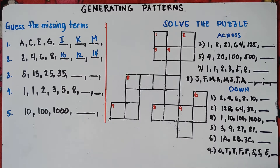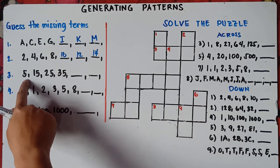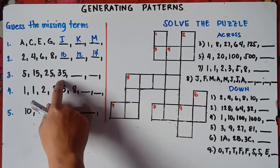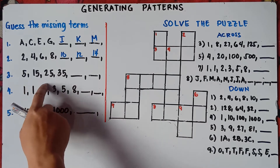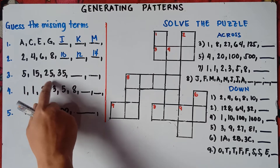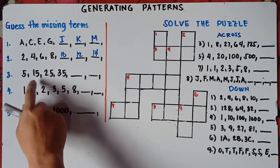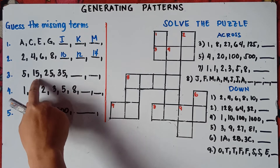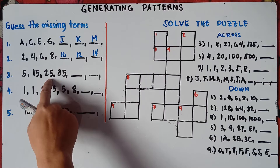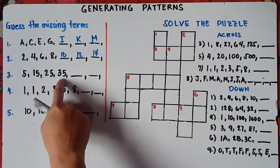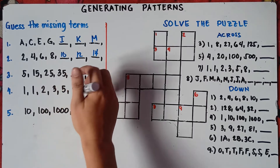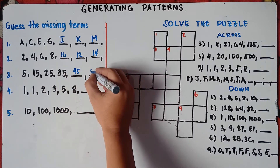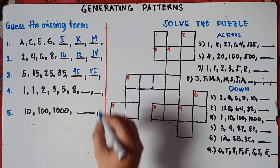This one: 5, 15, 25, 35. You will just add 10. 5 plus 10 is 15, 15 plus 10 is 25, 25 plus 10 is 35. So 35 plus 10 is 45, and the next number will be 55.